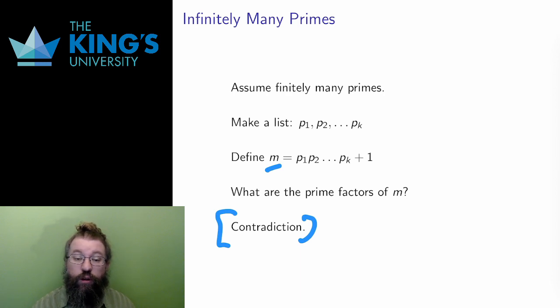Step 4: Conclude that the original statement was false, which finishes the proof. The assumption that there were only finitely many prime numbers led to a contradiction. Therefore, by contradiction, I have proved that there are infinitely many prime numbers.